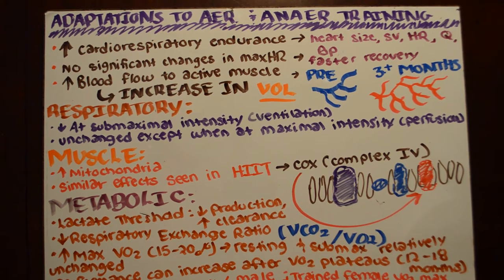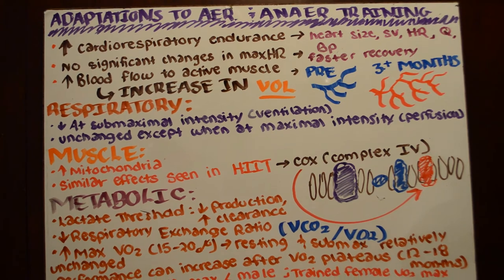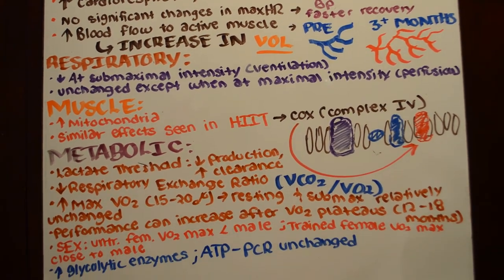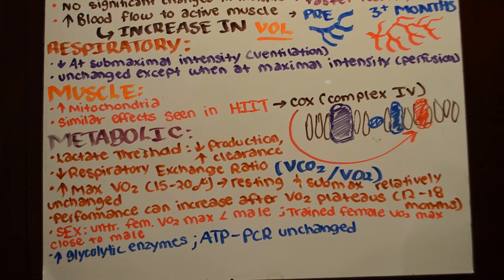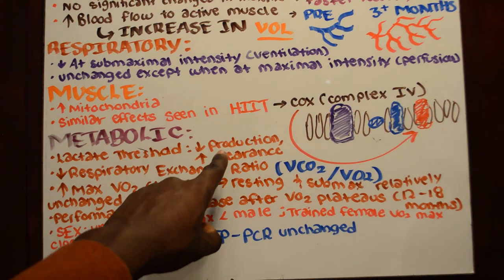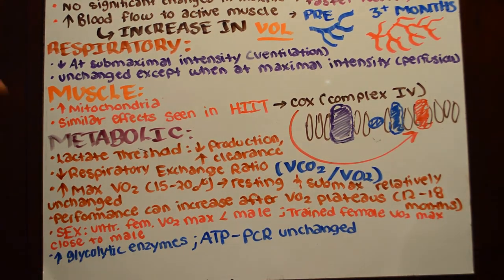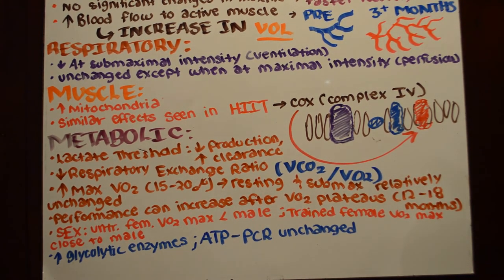In regards to metabolism, fatigue, and exhaustion, the first thing we'll see is a shift in the lactate threshold. It's going to take longer for lactate buildup to actually affect us — we'll see a decrease in lactate production and an increase in clearance, meaning less is made and more is cleared out. Along with that, we see a decrease in the respiratory exchange ratio (RER), which is the volume of CO₂ produced divided by the volume of O₂ consumed, and this affects the lactate threshold.